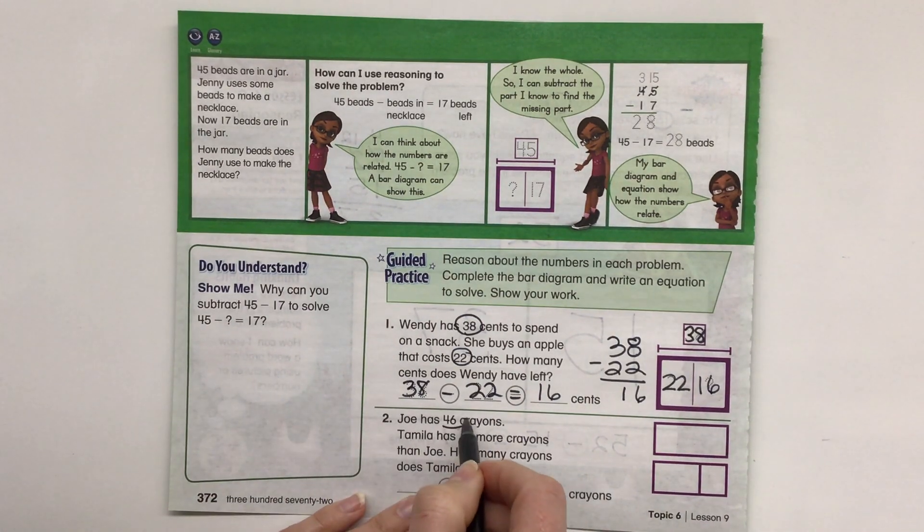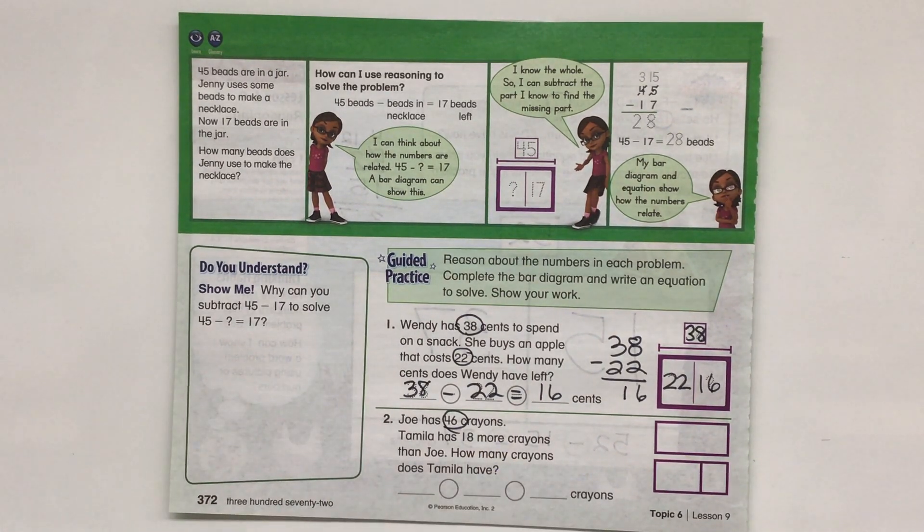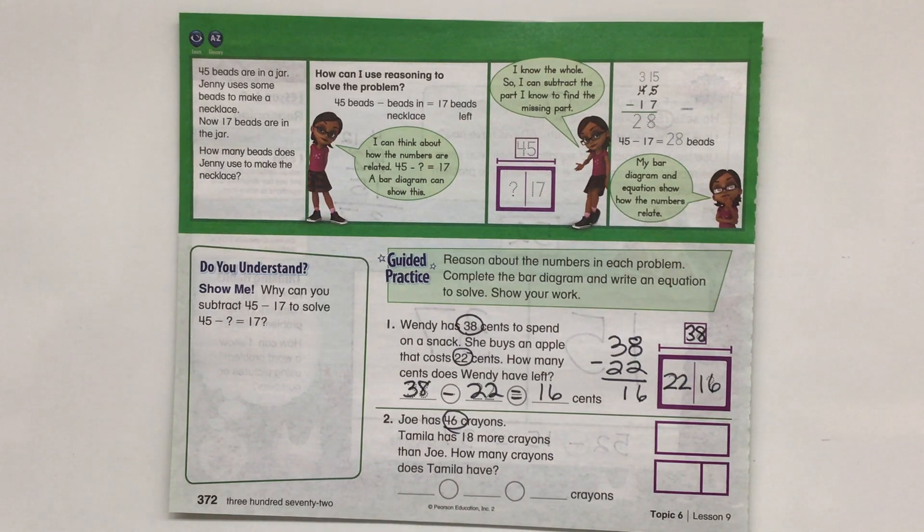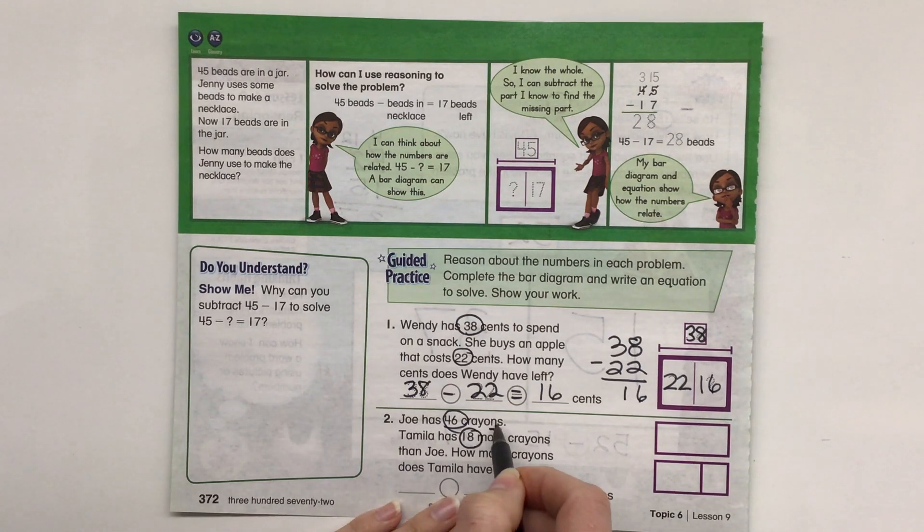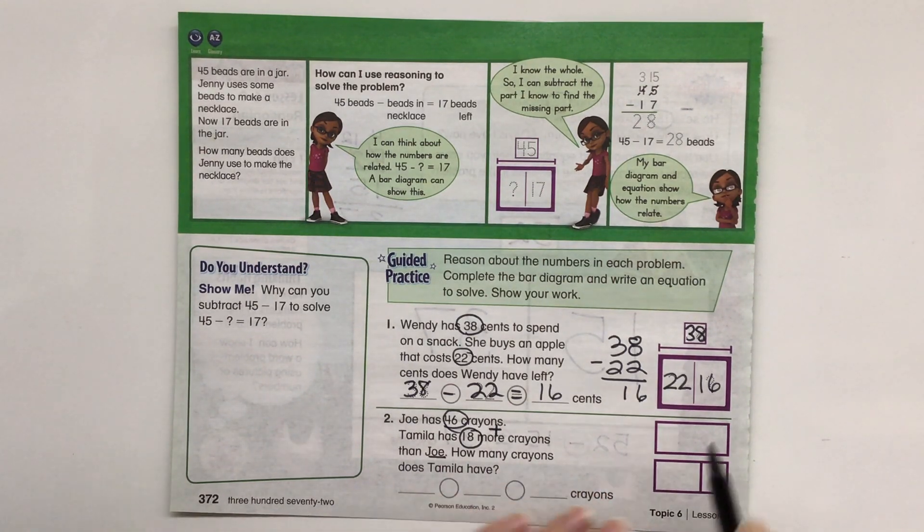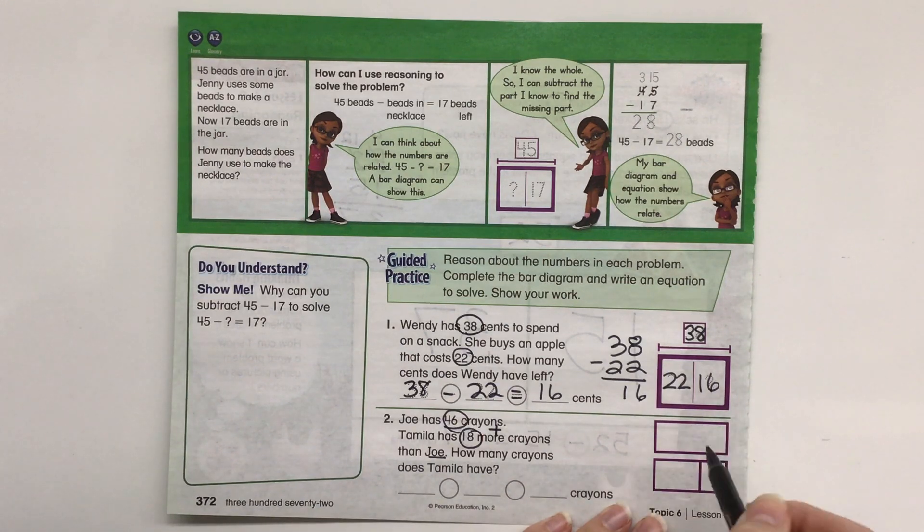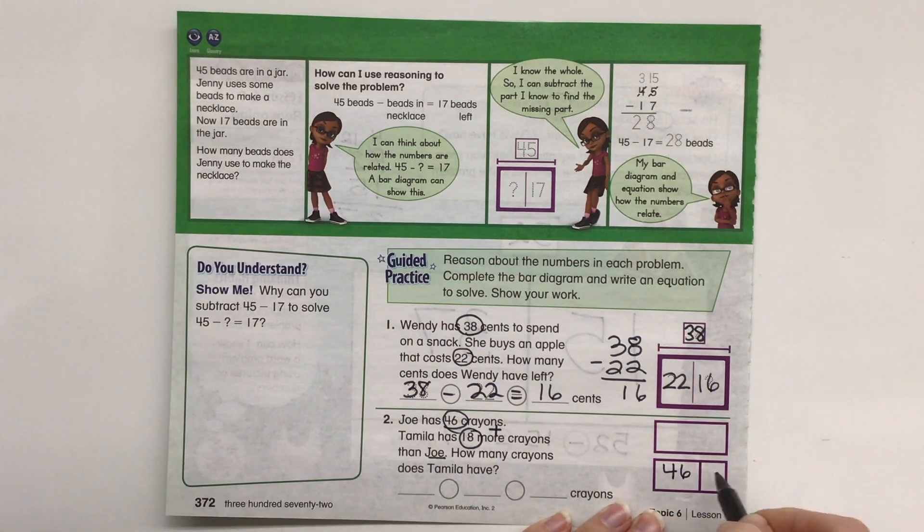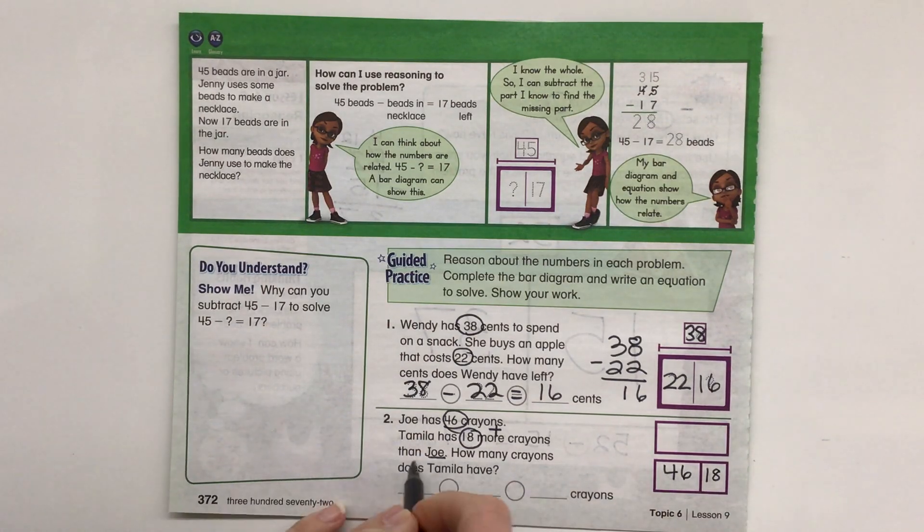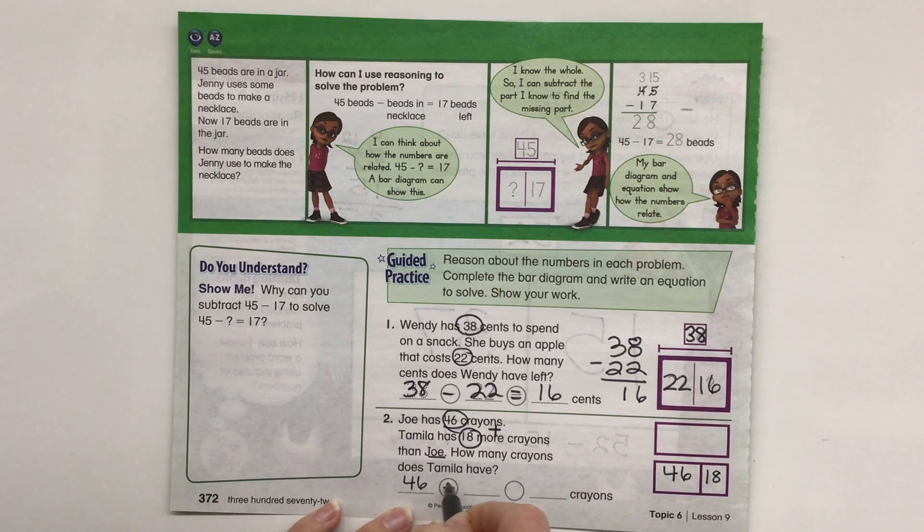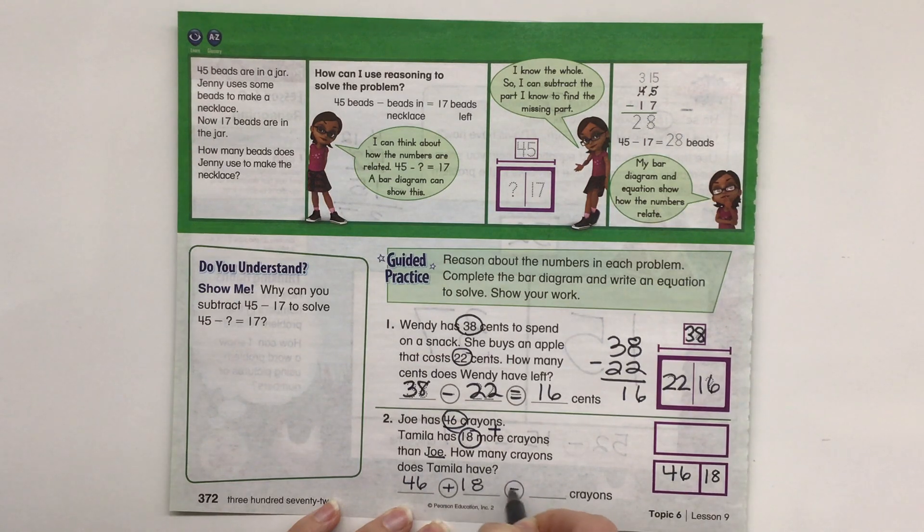Joe has 46 crayons. And Tamila has 18 more crayons than Joe. So we're trying to figure out how many Tamila has. So Joe has 46, Tamila has 18 more. So we are going to need to add this. 46 plus 18 more equals.